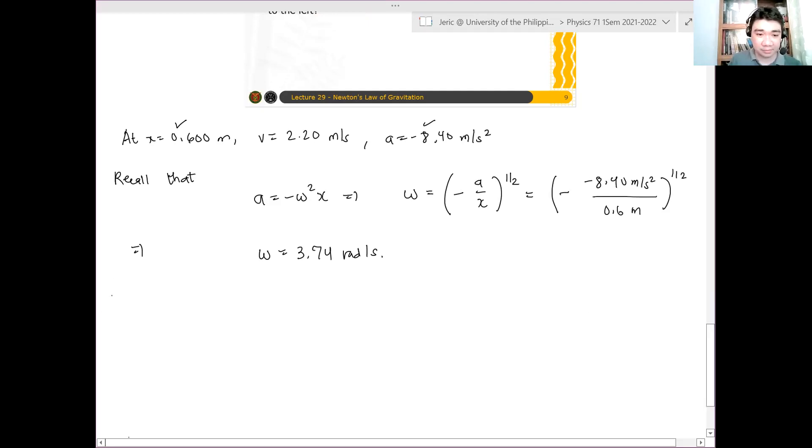Now, recall that the velocity and position and displacement are related. Again, we have here V equals plus or minus omega square root of a squared minus x squared. And for a certain velocity and position, you can determine the amplitude.